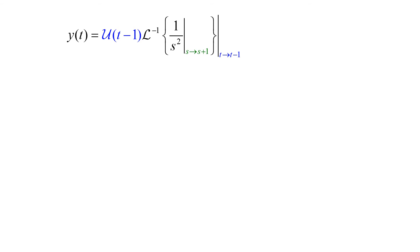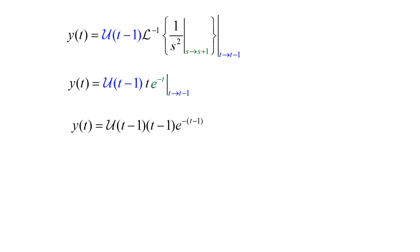This gives us y(t) equals the Heaviside function of t minus 1. The inverse Laplace of 1 over s squared gives us t, and the translation from s to s plus 1 gives us e to the negative t. Applying our translation from t to t minus 1, we get y(t) equals the Heaviside function of t minus 1, times (t minus 1), times e to the negative (t minus 1). And so that will be the solution to our initial value problem.